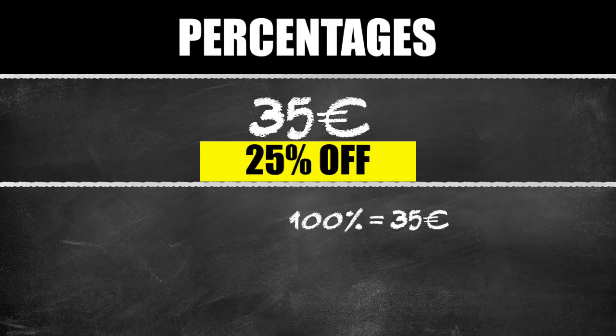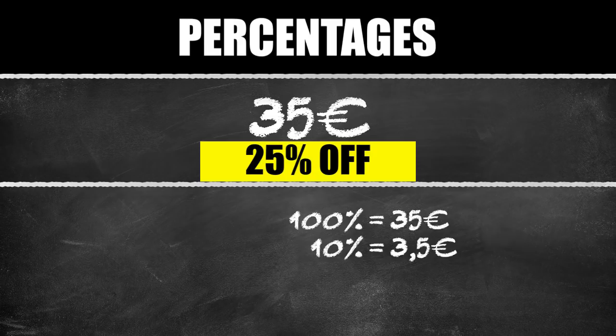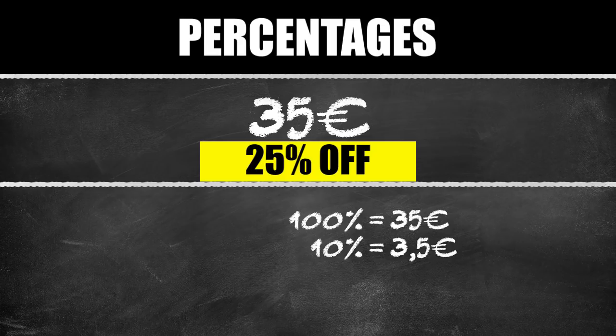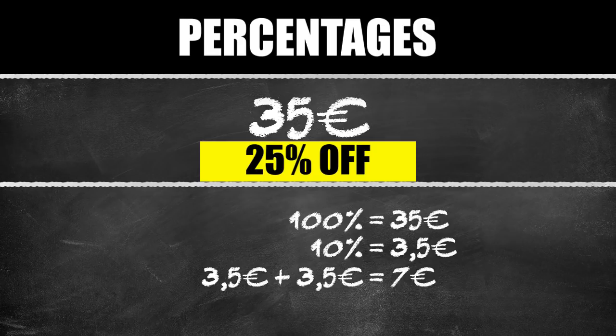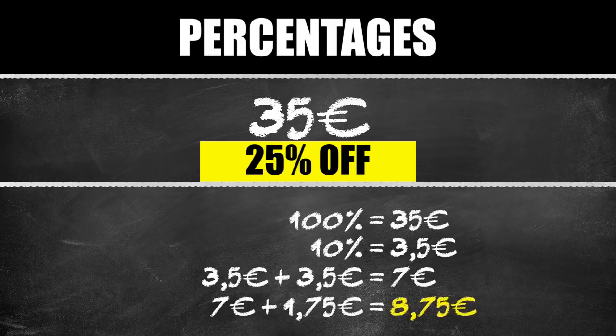At 35 euros, that would be 3.5 euros. Now we continue to the 20% of the 25%. And we can easily calculate that 3.5 plus 3.5 equals 7 euros. So for the last 5%, all we need to do is cut in half one of those 3.5s and we get 1.75 euros. Add that to the 7 euros and you get 8 euros and 75 cents.